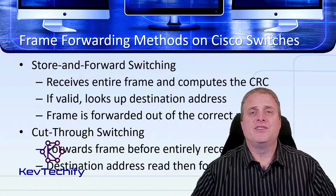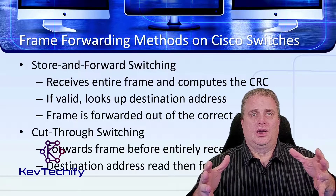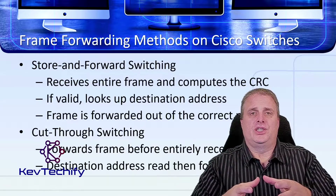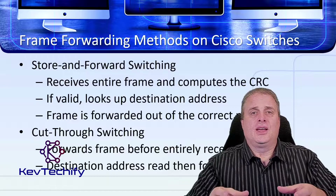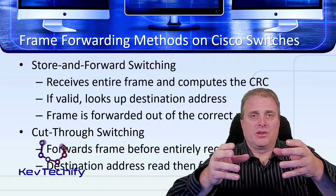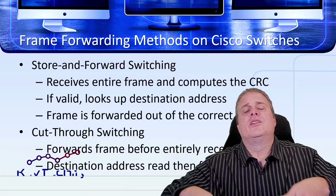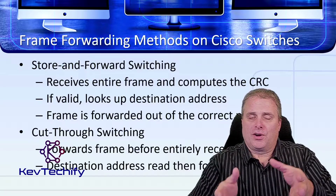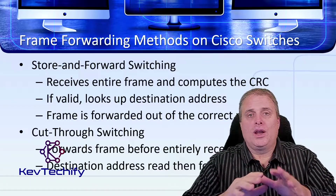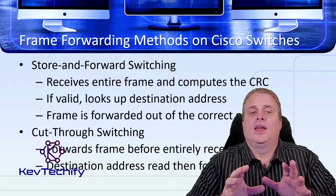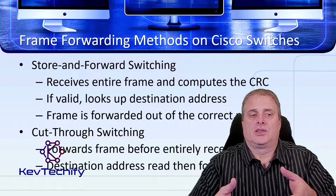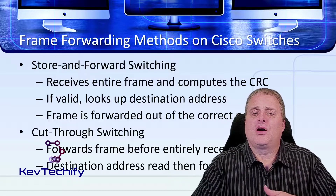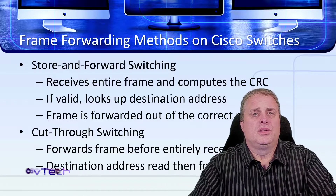Store and forward receives the entire frame in. Once the switch gets that in, the switch performs a cyclic redundancy check and calculates a value. It compares that value to the value in the trailer. If those two match, the frame is considered valid — there have been no errors, no changes to it — and then it looks up the destination address and forwards the frame out the correct port to its destination.